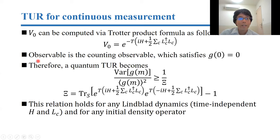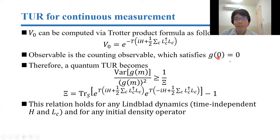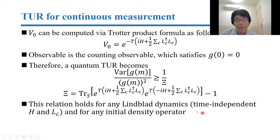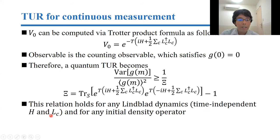Assuming the observable is of counting type, as stated previously, the counting-type observable naturally satisfies the required condition, so the quantum TUR becomes this equation. This relation holds for any Lindblad-type dynamics and for any initial density operators. However, we must assume that H and L_c do not depend on time, because when H and L_c depend on time, we cannot use the Trotter product formula.